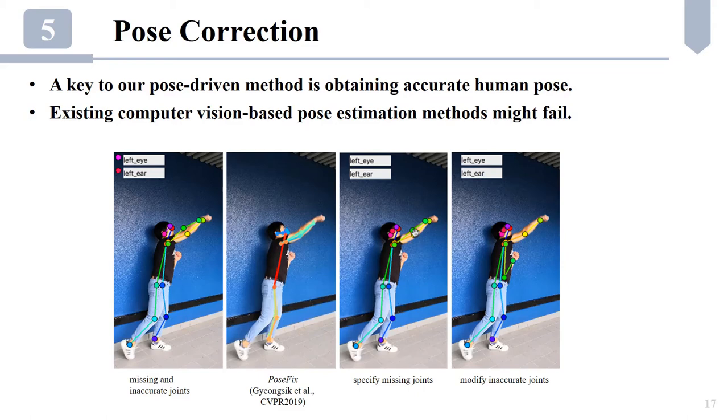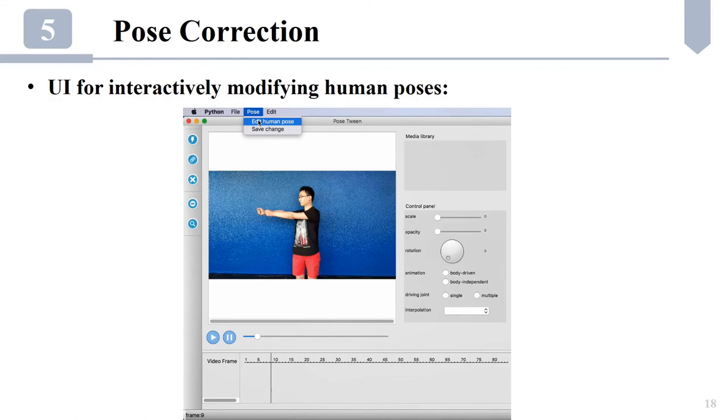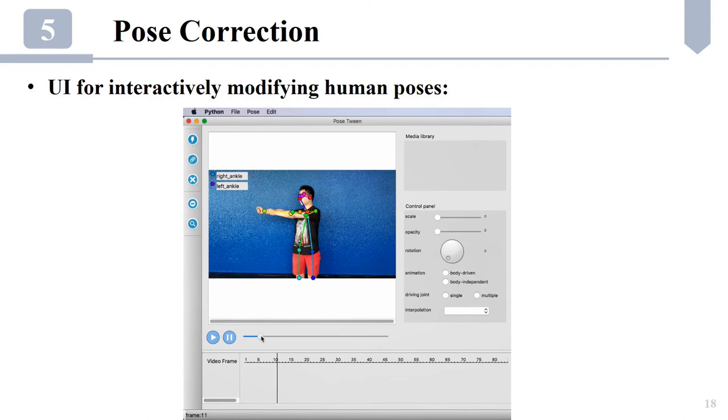Our pose-driven tween animation is based on the computed human poses from the videos. However, the existing 2D pose estimation methods might fail under certain circumstances. As shown in the figure on the left, the joints might be missing or inaccurate due to occlusions. We thus also provide a tool that allows users to manually correct the joint position errors.